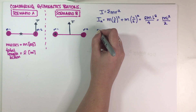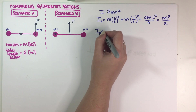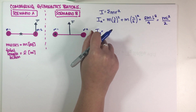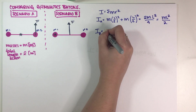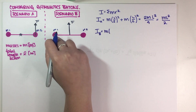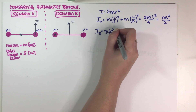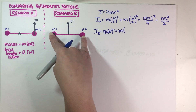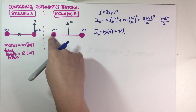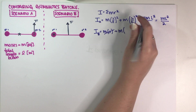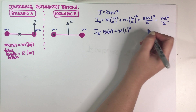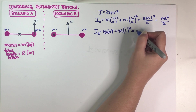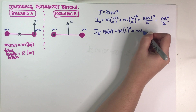Now let's do that for scenario B. We have two masses. The first mass has R equal to zero, so it cancels out. The other mass has R equal to the entire length L, not half. So I_B is just equal to ML squared.